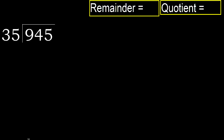945 divided by 35. 9 is less, therefore next. 94 is not less, therefore we work with 94. 35 multiplied by which number is nearest to 94 but not greater?